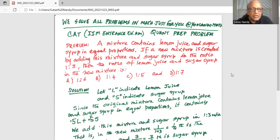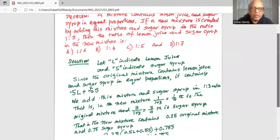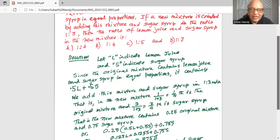If a new mixture is created by adding this mixture and sugar syrup in the ratio of 1 is to 3, then the ratio of lemon juice and sugar syrup in the new mixture is... and there are four alternatives.